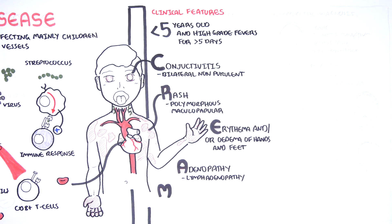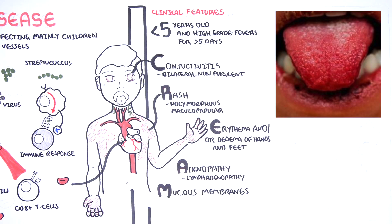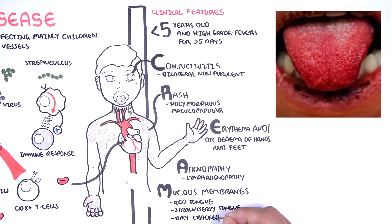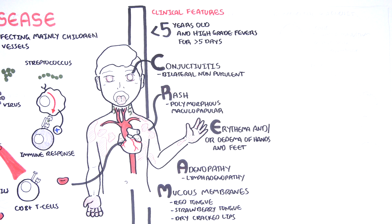M is for mucous membrane changes, which include red tongue, strawberry tongue, and dry cracked lips. Diagnosis of Kawasaki is made if the child has 4 of the 5 CREAM criteria, as well as having a fever for more than 5 days.